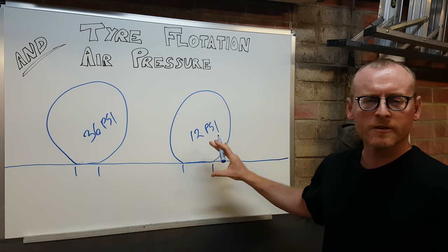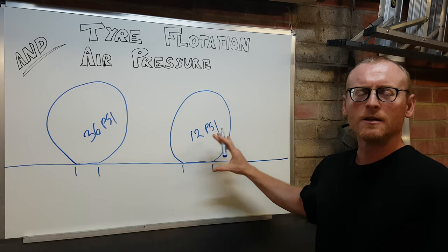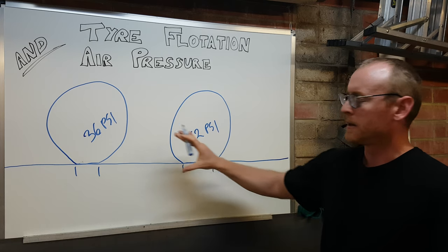So if you go onto a soft surface, you'll notice that this one sinks a lot less than that one.